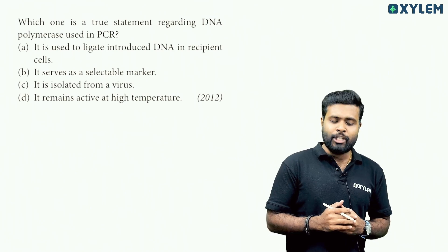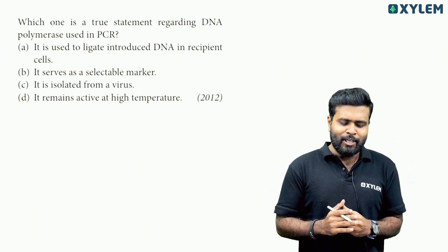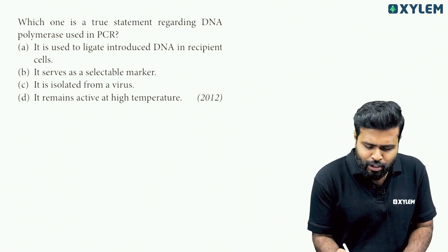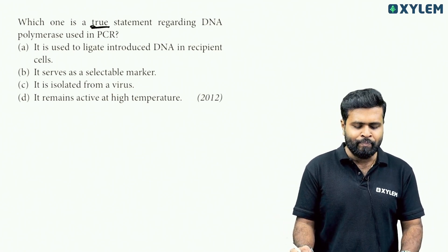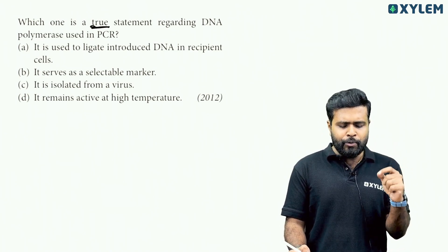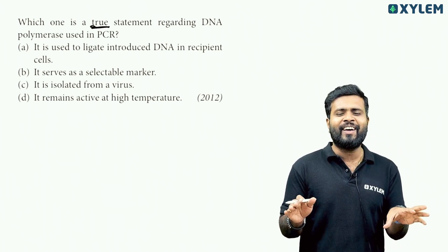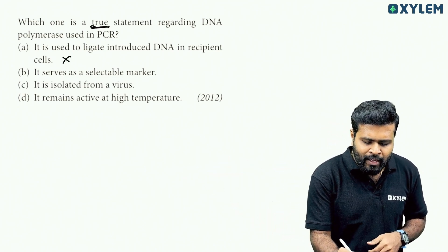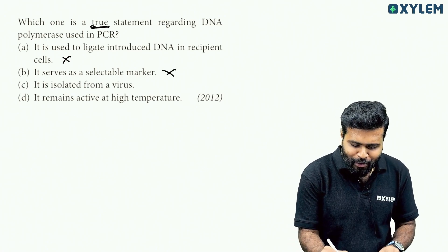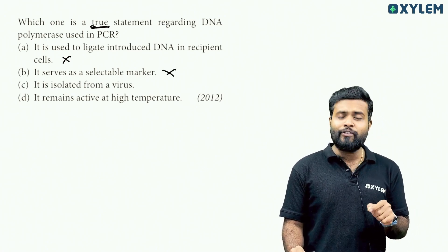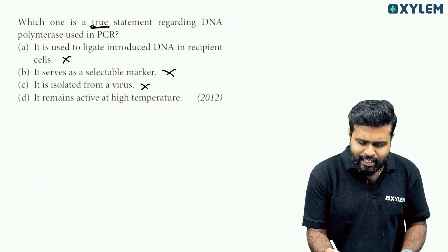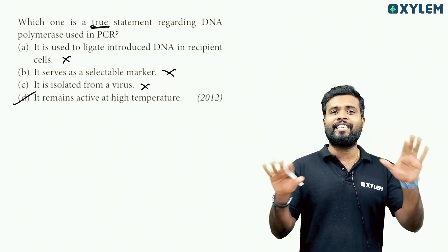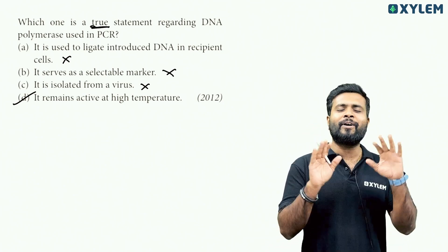Next question. Which one is a true statement regarding DNA polymerase used in PCR? Option A: It is used to ligate introduced DNA in recipient cells - that is wrong. Option B: It serves as a selectable marker - No. Option C: It is isolated from a virus - No, it is from a bacterium. Option D: It remains active at high temperature - that is the correct answer.